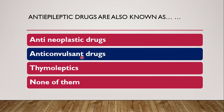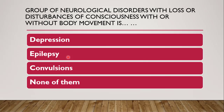Why anti-convulsant? Because in epilepsy, seizures are with convulsions. When seizures are with convulsions, it is epilepsy, and when seizures are without convulsions, it is non-epileptic seizures. Next question: a group of neurological disorders with loss or disturbances of consciousness, with or without body movement, is called — whether it is depression, epilepsy, convulsion, or none of them.